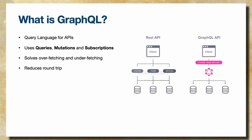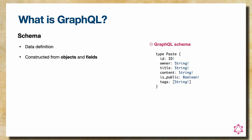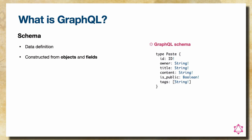When talking about GraphQL, we start with the data model — the schema. A schema is basically a definition of objects and fields. Throughout this talk I'll use the Pastebin data model. Pastebin is a website where you upload text snippets and share them. On the right side, we have an object type called Paste, with metadata fields like author, title, content, and a permission flag for public or private. This is what constructs a GraphQL schema.